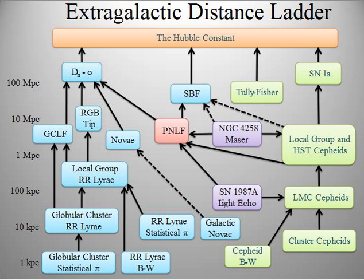Discovered in 1956 by Olin Wilson and M.K. Vainu-Bappu, the Wilson–Bappu effect utilizes the effect known as spectroscopic parallax. Many stars have features in their spectra, such as the calcium K line, that indicate their absolute magnitude. The distance to the star can then be calculated from its apparent magnitude using the distance modulus. There are major limitations to this method: the calibration of the spectral line strengths has limited accuracy and it requires a correction for interstellar extinction. Though in theory this method can provide reliable distance calculations to stars up to 7 megaparsecs, it is generally only used for stars at hundreds of kiloparsecs.